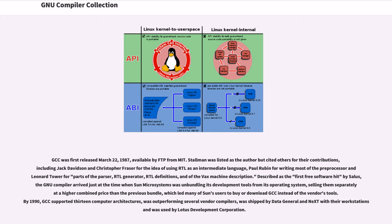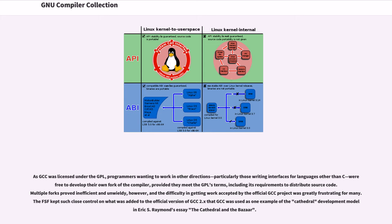Described as the first free software hit by Salus, the GNU compiler arrived just at the time when Sun Microsystems was unbundling its development tools from its operating system, selling them separately at a higher combined price, which led many of Sun's users to buy or download GCC instead of the vendors' tools. By 1990, GCC supported 13 computer architectures, was outperforming several vendor compilers, was shipped by Data General and NeXT with their workstations, and was used by Lotus Development Corporation. As GCC was licensed under the GPL, programmers wanting to work in other directions were free to develop their own fork of the compiler, provided they meet the GPL's terms, including its requirements to distribute source code.